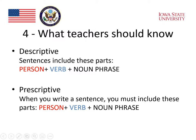Let's take a look at these important characteristics of grammar that teachers should know. One is the distinction between descriptive and prescriptive. A descriptive grammar tells us how sentences are made by real people as they use the language. It would have a description such as sentences are made from these parts: a person, the verb, and then the noun phrase. That's a descriptive statement — it says how sentences are put together.